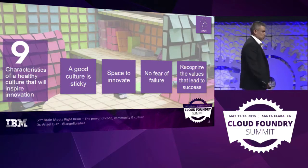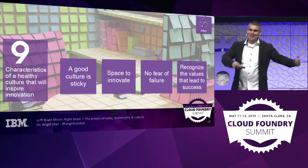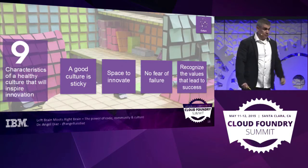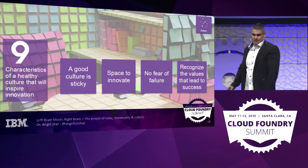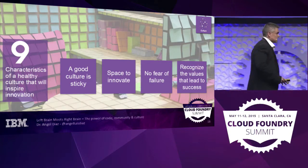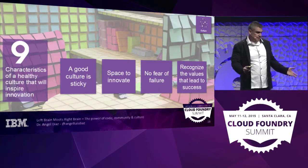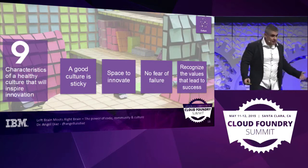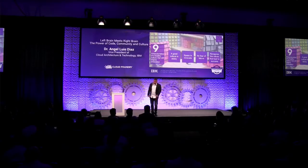Number nine: culture. Two examples. First: 3M and the sticky note. Some engineers came up with something that was sticky — kind of sticky, not sticky enough — you can unstick it, stick it. What are we going to do with this thing? 3M didn't kick them out. They said, keep on experimenting, figure it out. And they created something pretty cool that has been very, very usable. That is an example of good culture.